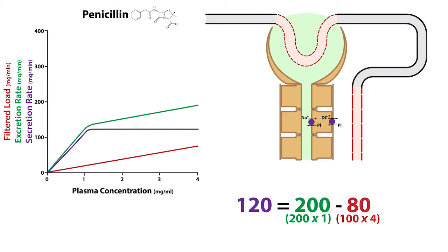In addition, notice how the initial slope of the excretion rate is steeper than the slope of the filtered load and the secretion rate, while it levels off once secretion has reached its transport maximum. At plasma concentrations greater than this, the slope of the excretion rate now equals that of the filtered load because excretion is now solely dependent on the filtered load.